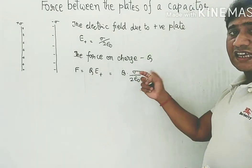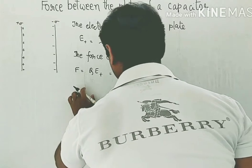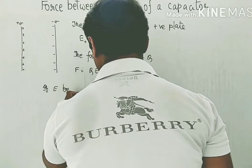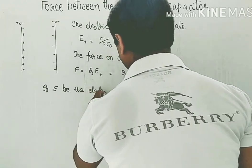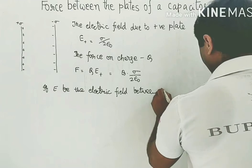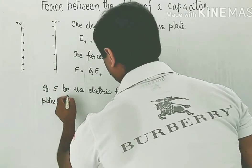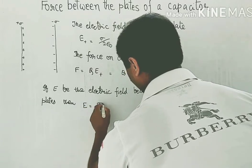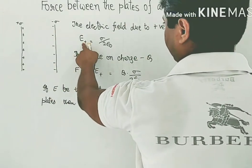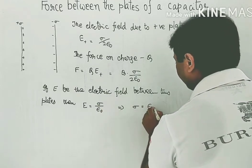Now sigma is Q by A. The electric field between the two plates in this region is E equals sigma by epsilon naught. This is the electric field between the parallel plates. From the positively charged plate, we calculate sigma, which equals epsilon naught into E.